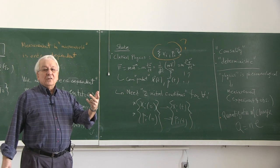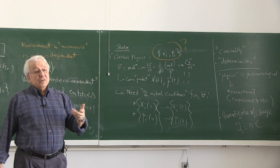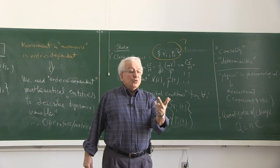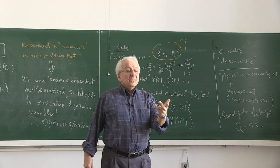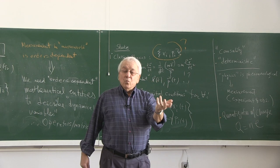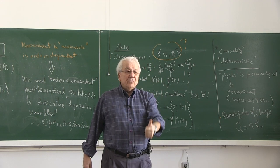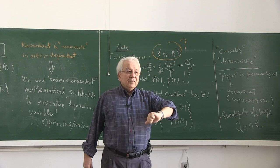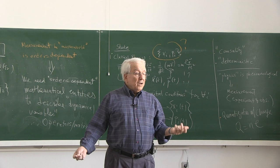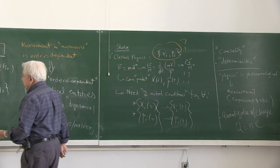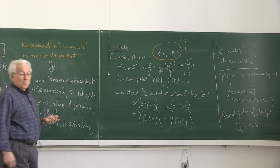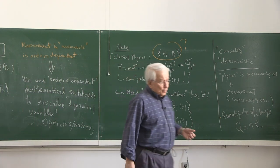Spin one-half particles have two states — it's a finite two-dimensional linear vector space. Handling it is easy: any measurement yields two results, not an infinite set of values. You get either one result or the other, defined by the direction of the magnetic field — spin is either aligned up or down. If it is one of two, it is easy to handle that problem.